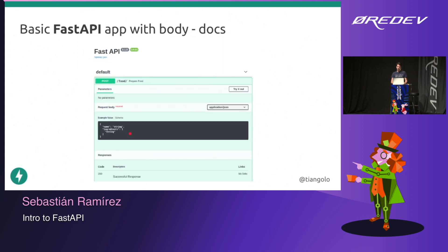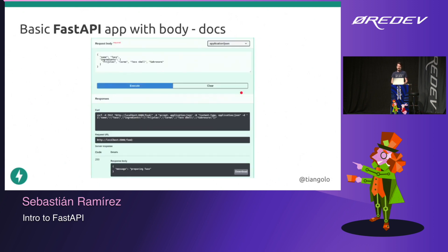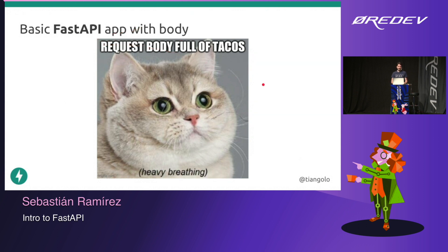If we click 'Try it out' in the browser on the server we're developing live, we can send a request with data to that server right away. For example, we send the name taco with ingredients: frijoles, carne, taco shell, y sabrosura — all the ingredients for a taco, or at least some of them. We execute that and receive the response directly from the running server. This is an interactive documentation, not something fixed. We can send requests and get responses while developing, which helps make iterations faster — and lets us send requests full of tacos, which is great.